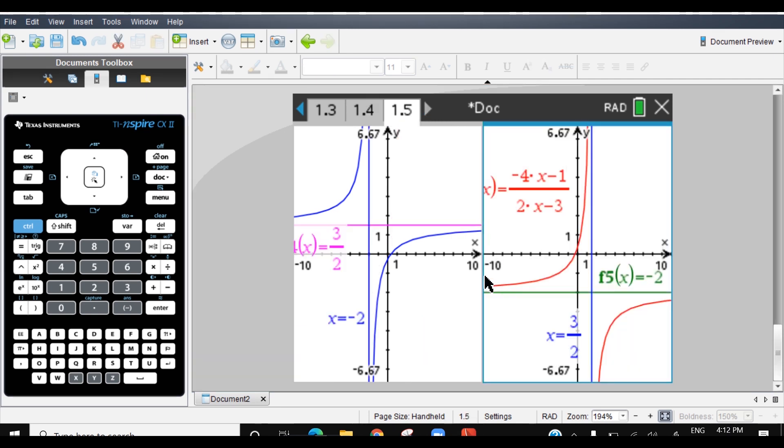And that's why y = 3/2, which was the horizontal asymptote for f(x), becomes x = 3/2, a vertical asymptote for its inverse function. And the same happens with the other asymptote, which is vertical.